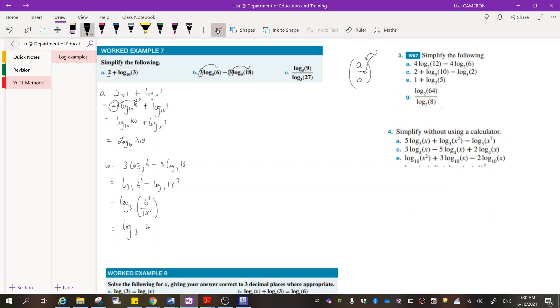So log three, six over eighteen cubed. Now I know that I can simplify this fraction because they both share six as a common factor. So log one over three to the power of three.